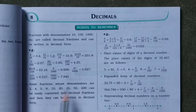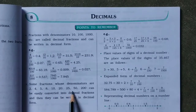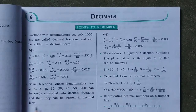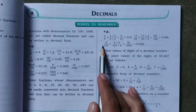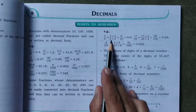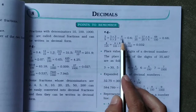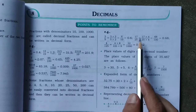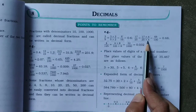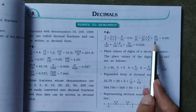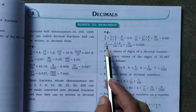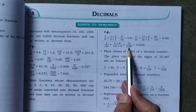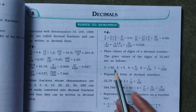Some fractions whose denominators are 2, 4, 5, 8, 10, 20, 25, 50, 200 can be easily converted into decimal fractions. Example: 3 by 5 — multiply numerator and denominator by 2 to get 6 by 10, which is 0.6. Seventeen by 25 — multiply by 4 to get 68 by 100, which is 0.68. Four by 125 — multiply by 8 to get 32 by 1000, which is 0.032.